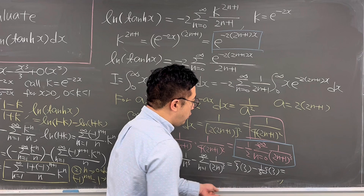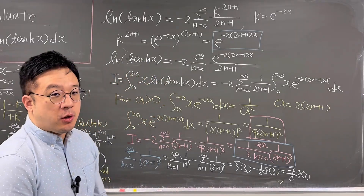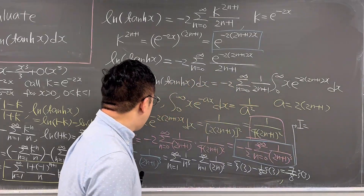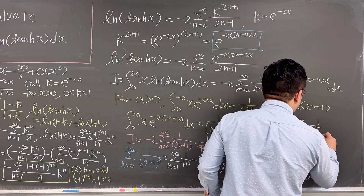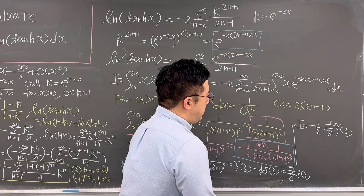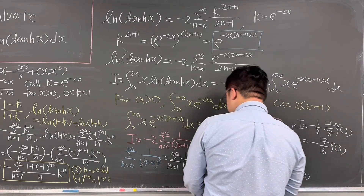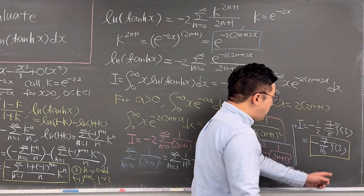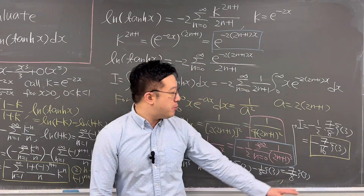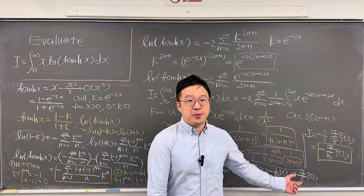This equals 7 over 8 times zeta(3). Going back to our integral, I equals negative 1 over 2 times 7 over 8 times zeta(3). The answer for this question is negative 7 over 16 times Riemann zeta of 3, the Apéry constant. That's the answer for this question — pretty interesting that this viewer-suggested integral ended up giving us the Riemann zeta function. How amazing.